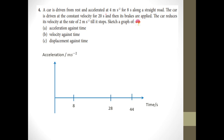For the first part, the car starts from rest at 0 meters per second, then travels at constant velocity for 20 seconds after that, and then brakes are applied. Now, why do I put 8 seconds, 28 seconds, and 44 seconds on the axis? 8 seconds because the car accelerates at 4 meters per second squared for the first 8 seconds. I mark 8 seconds here, and then it travels at constant velocity for 20 seconds, so I add another 20 seconds after the 8 seconds, giving 28 seconds.